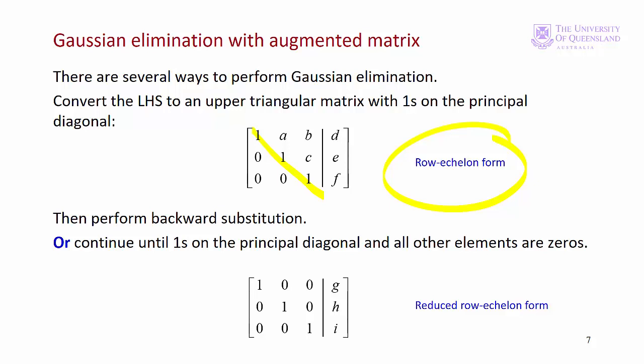If we stop at this point we use backward substitution to obtain values of x and y. Another approach is to keep on doing the elementary row operations until we have what's known as the reduced row echelon form, where we have the principal diagonal of ones but all the off-diagonal elements are zeros. In this case the right hand side of the augmented matrix contains the actual solutions for x, y and z.